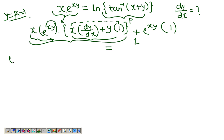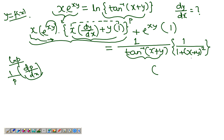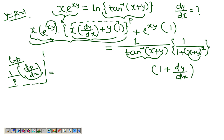For the RHS, we have ln of p, where p equals tan⁻¹(x) plus y. Using the chain rule, it would be 1/p · dp/dx, so 1/p becomes 1 over (tan⁻¹(x) + y). For dp/dx we again apply the chain rule, giving 1 over (1 + (x + y)²), and then we differentiate (x + y), whose derivative is 1 plus dy/dx.